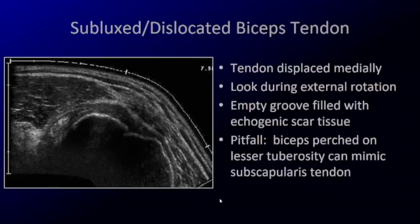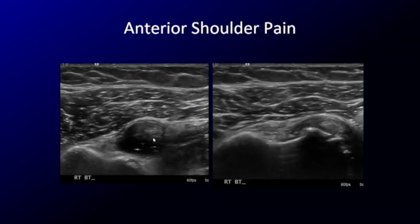Patients will confirm that's where they feel their pain. Instead of rupturing, the tendon may dislocate or sublux — when that happens, it subluxes medially. It's easier to see if you have the patient externally rotate. The groove may be filled with scar tissue that is hyperechoic, so follow it down and look for tendon fibers. Sometimes the tendon may be perched onto the tuberosity and can mimic the subscapularis tendon. In this patient I could not find the biceps tendon at first in the groove — tracing upward, I found the tendon actually displaced medially into the substance of the subscapularis tendon.